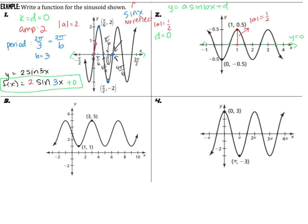Now we need to figure out the period. Since we're not dealing with horizontal translations, we can start on the x-axis and identify the five key points. Going from the first to the fifth point, we're going from 0 to 2, so the period is 2. If the period is 2, then 2 equals 2π over B. Multiplying both sides by B gives 2B equals 2π, so B equals π.